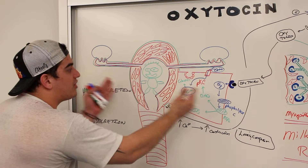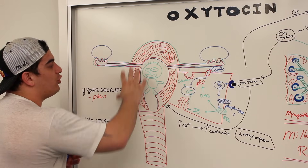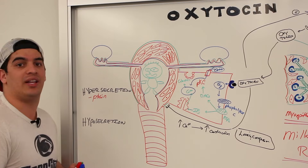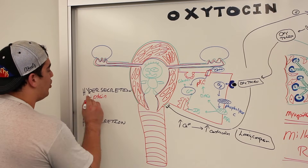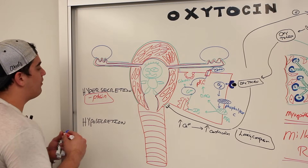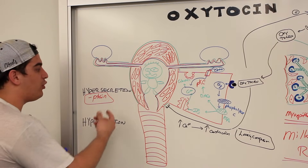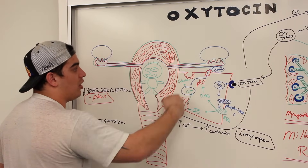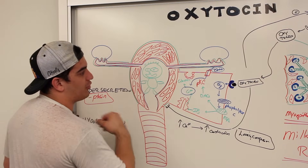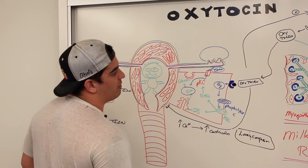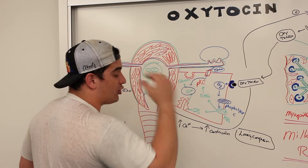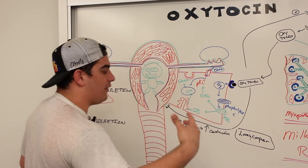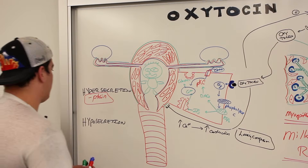Pitocin is going to increase the actual uterine contractions, which helps push the fetus out. There aren't too many common causes of elevated oxytocin levels, but if you imagine what it's normally doing, just increase that response. So it could cause undesirable increased contractions of the uterus, increased milk ejections, increased contractions of the male urogenital tract, and increased feelings of love and compassion.